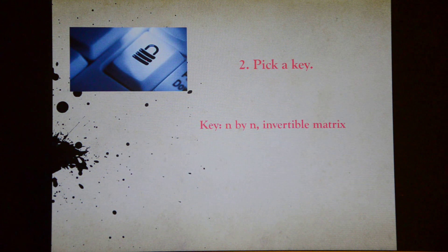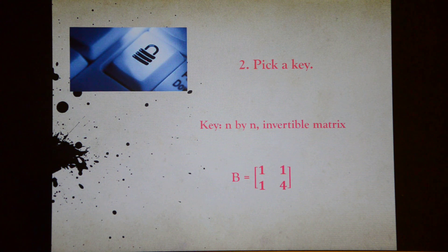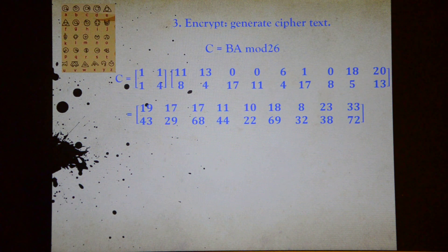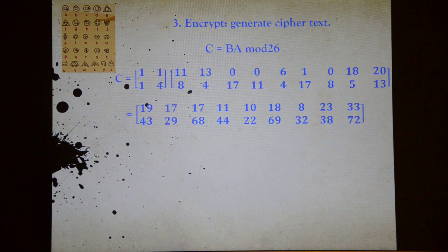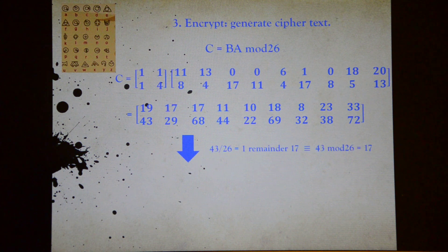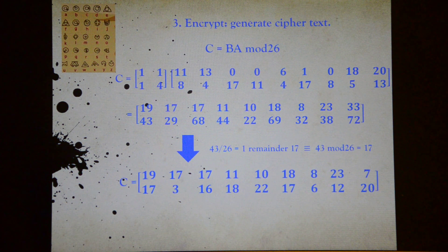Second, form an encryption key, which should be an N by N invertible matrix B. Let's use this particular encryption key for our example. Then multiply A by B and get the transformed matrix C. However, since we need to transform the matrix back into letters again, we need to change all numbers in this matrix that are greater than 26 into values less than or equal to 26. The way we do it is to divide each number by 26 and write down the remainder to form our matrix C. After we've done that, this is the C matrix we end up with.